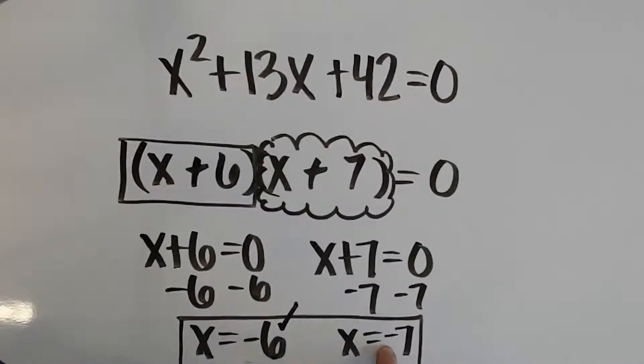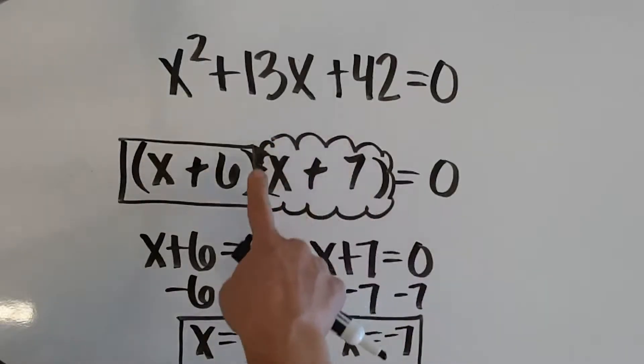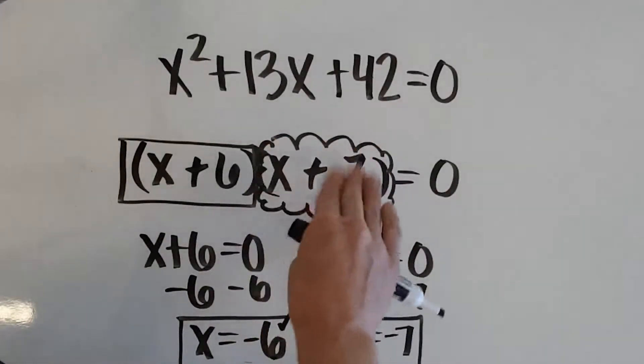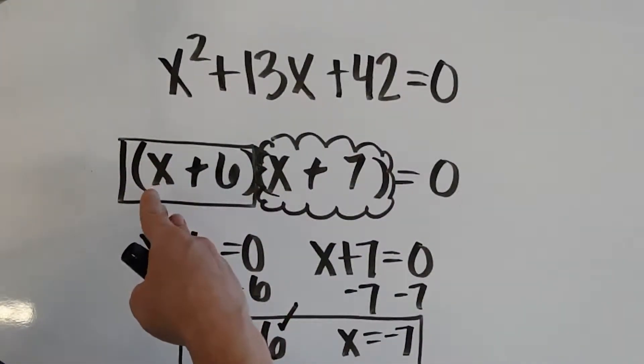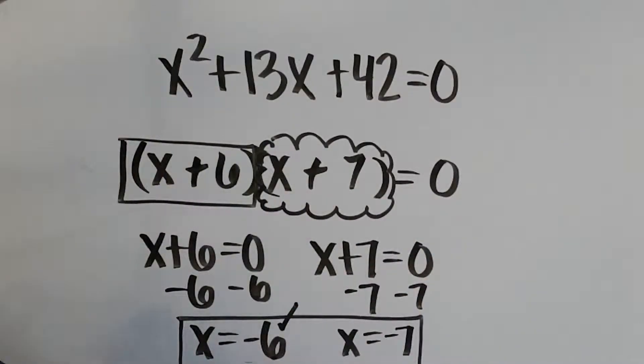The same thing with negative 7. When x is negative 7, my bubble becomes 0. So, 0 times something, doesn't even matter what it is, is still going to give me 0 in the end. So, my two solutions when solving this quadratic equation are negative 6 and negative 7.